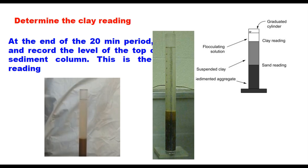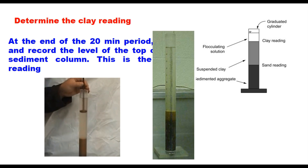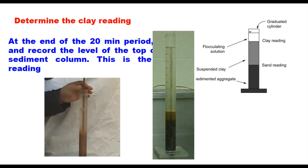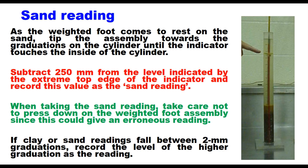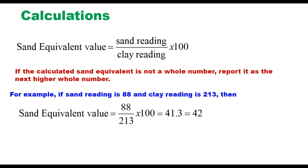After the clay reading, place the weighted foot assembly over the cylinder and gently lower it until it comes to rest on the sand. Tip the assembly towards the graduation markings until the indicator touches the inside of the cylinder. Subtract 250 mm from the level indicated by the top edge of the indicator and record this as the sand reading. Do not press down on the weighted foot assembly, as this could give an erroneous reading. If readings fall between two graduations, record the higher graduation.